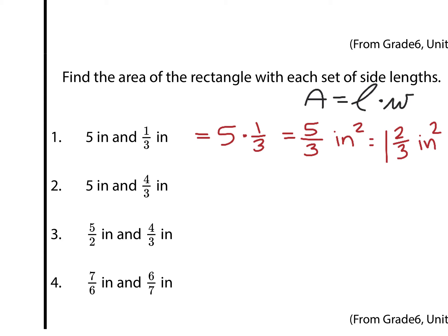What about the next one? Five inches and four-thirds inches. We have five, which really is just five over one, times four-thirds inches, which will get you twenty-thirds square inches. And if you wanted to write this, twenty divided by three, well that gets you about, well exactly, really, six and two-thirds square inches.